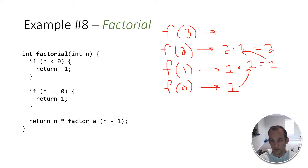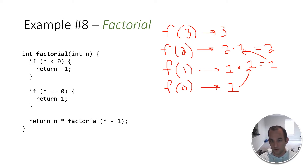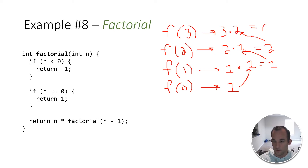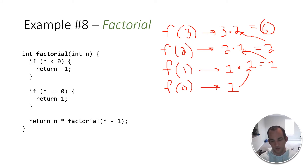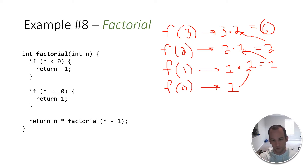And now we come back up to factorial of three. We returned three times factorial of three minus one, which is two. We already did that, so three times two equals six — and that means the answer for factorial of three is six, which is correct. It is three times two times one. And that's actually kind of how recursion works, but I'll go over a little bit more after this.